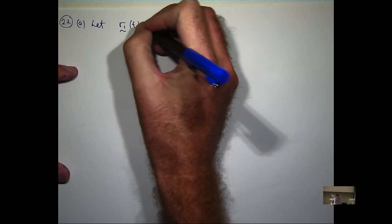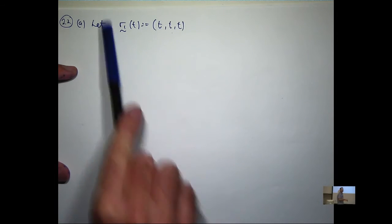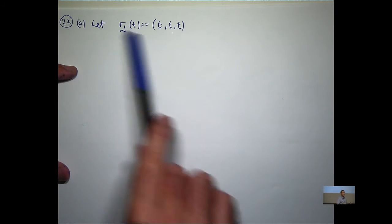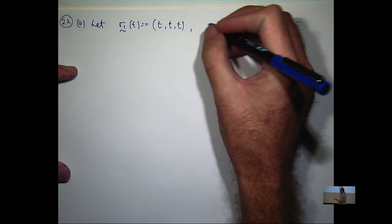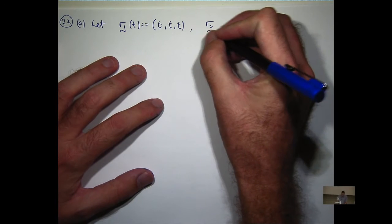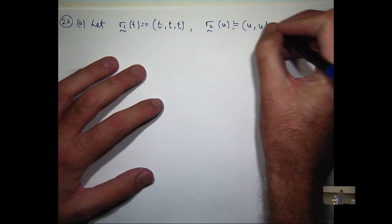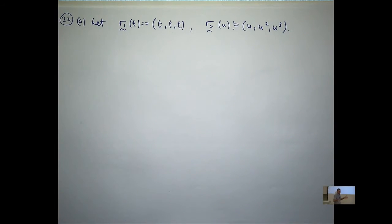So my first vector function is just going to be this. What's the curve associated with this going to be? A line. And now I'm going to switch to a second variable, u. We're sort of implicitly understanding that it's defined for all t and all u, but really we're only interested in the intersection.